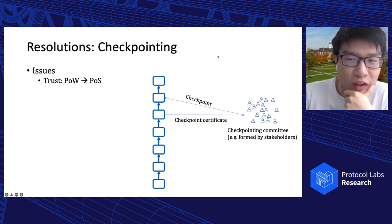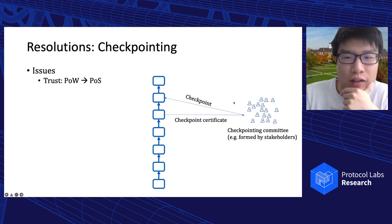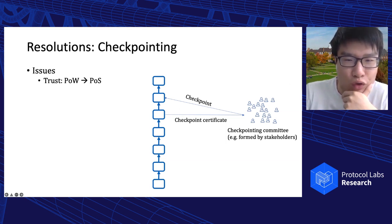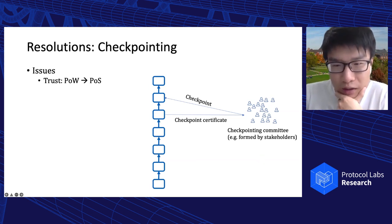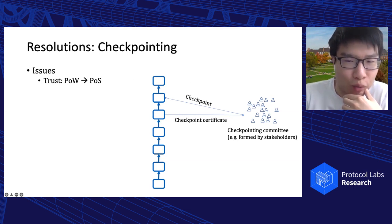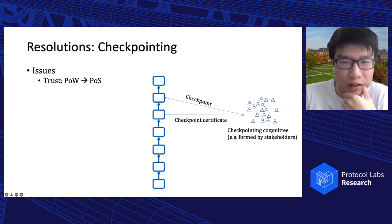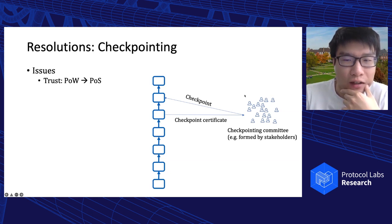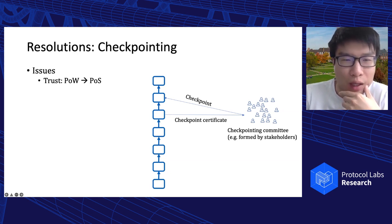However, in the checkpointed ledger, the trust is just shifted from PoW to PoS. The security of the scheme is solely guaranteed by the checkpointing committee, drawn from the pool of stakeholders, but not by the miners. The question is: if we have such a trusted checkpointing committee, why do we still need a PoW blockchain? We can just let the checkpointing committee run a permissioned BFT protocol like HotStuff, which would achieve much higher throughput and lower latency.